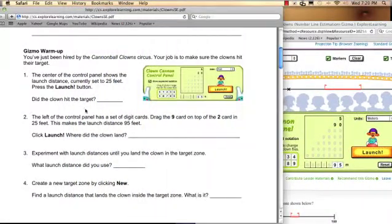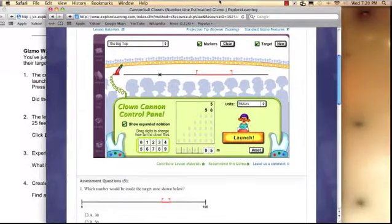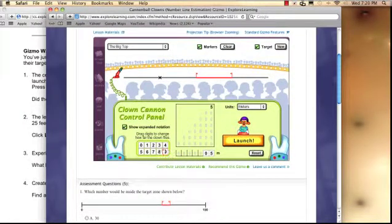So, back to the exploration sheet. Experiment with launch distances until you land the clown in the target zone. What launch distance did you use? Here's where the exploration begins. So, now the students are talking to each other with their partners by themselves. Say, let's try, I don't know, let's try 45. Oh, that's in meters. No wonder. Let's just change this to 15 meters. Okay. And launch. Oh, I hit the target. I think I did. Yes. So, there you go. 15 meters.